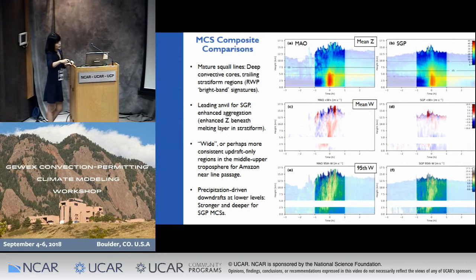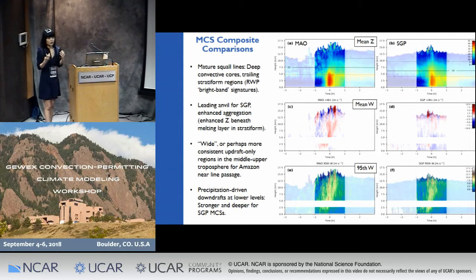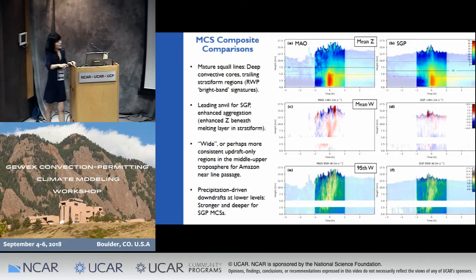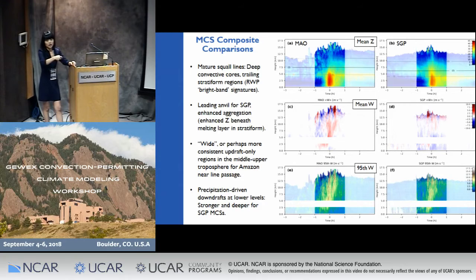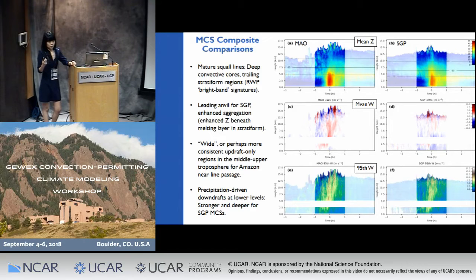But dynamically you do see a lot of differences between these systems. For Amazon you tend to see this wide consistent updraft plume always at the convective core, whereas in SGP you don't really see that. It doesn't necessarily mean that SGP storms are not stronger — it's just that they are not always happening at the same time and location. When you get to the 95th percentile vertical velocity, you tend to see more intense updraft cores happening at SGP sites.